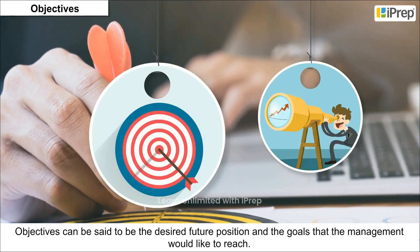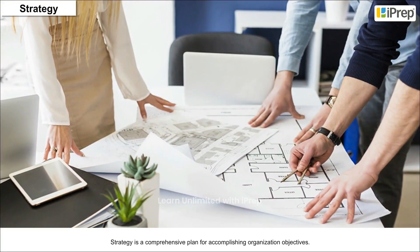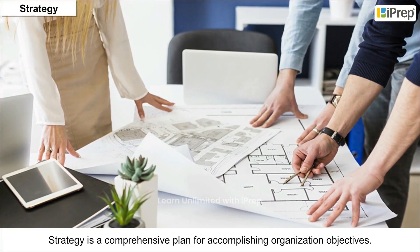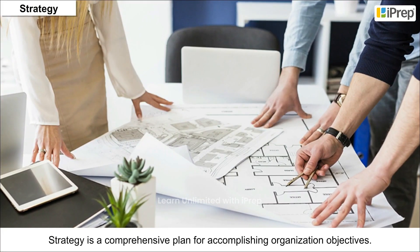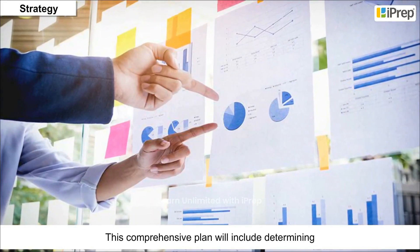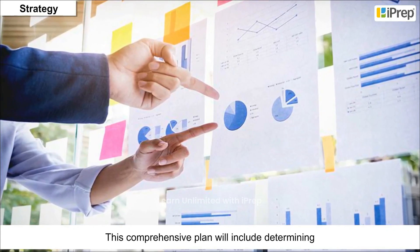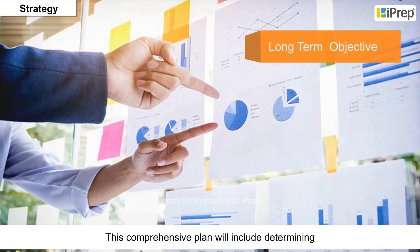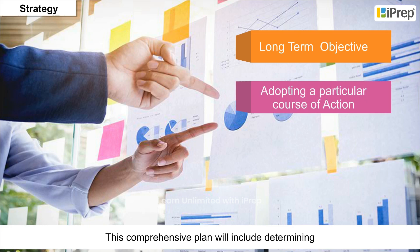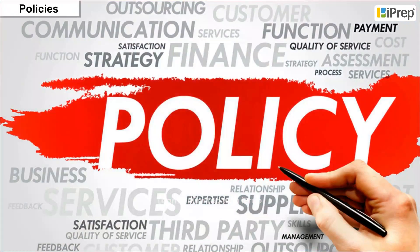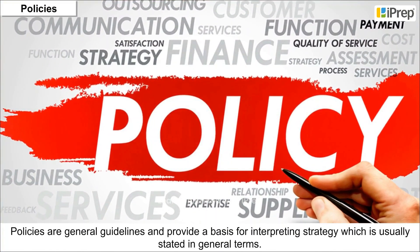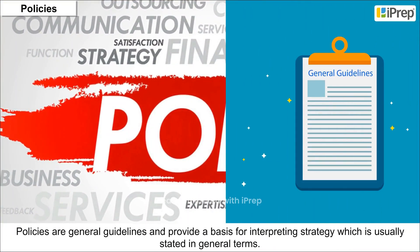Strategy is a comprehensive plan for accomplishing organization objectives. This comprehensive plan will include determining long-term objectives, adopting a particular course of action, and allocating resources.